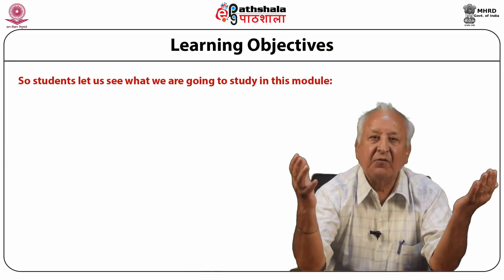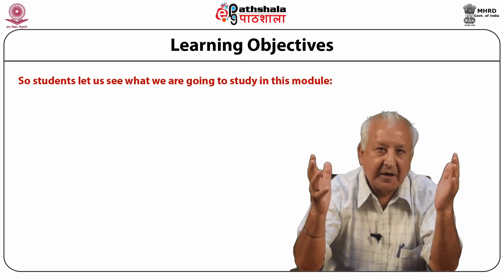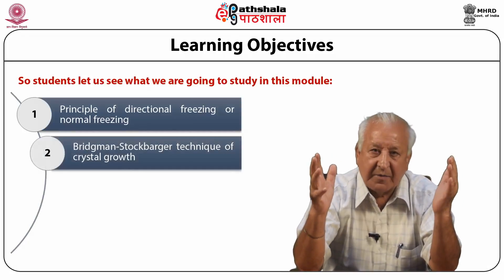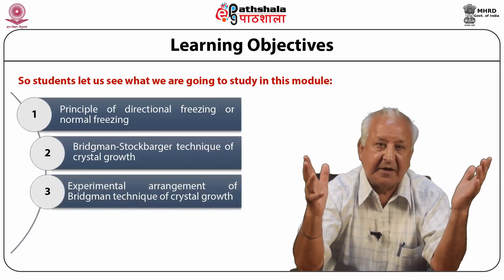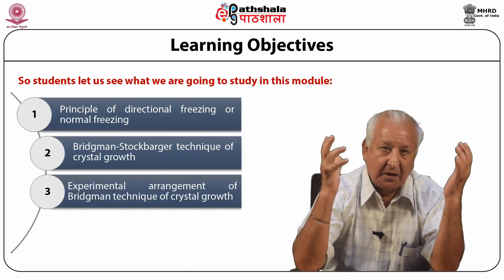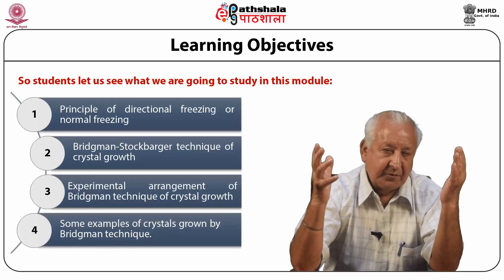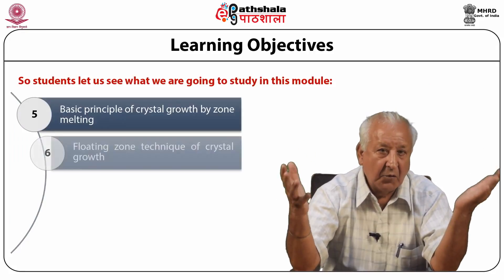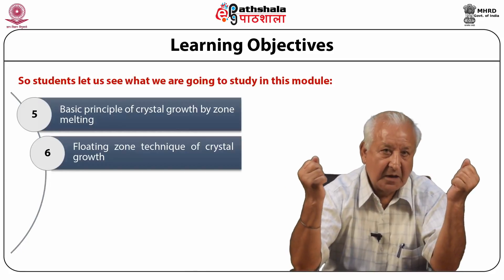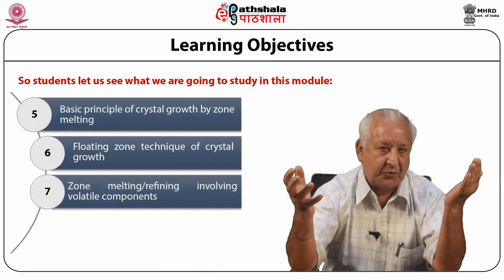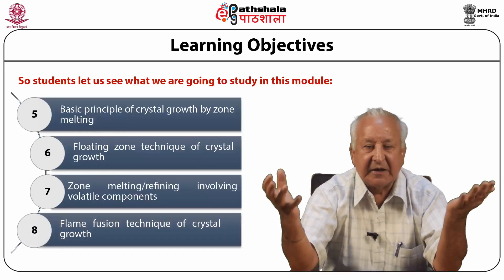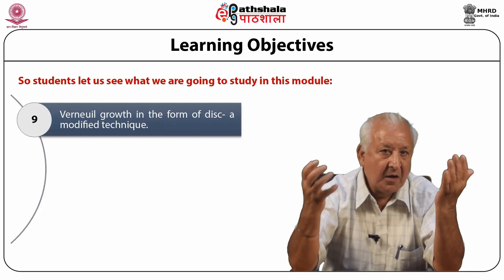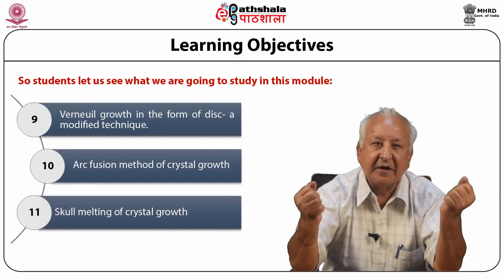Let us see what we are going to learn in this module. We will be learning about the principle of directional freezing or normal freezing, the Bridgman-Stockburger technique of crystal growth, experimental arrangement of Bridgman technique, examples of crystals grown by Bridgman technique, basic principle of crystal growth by zone melting, floating zone technique, zone melting refining involving volatile components, flame fusion technique, Verneal growth in the form of a disc, arc fusion method, and skull melting of crystal growth.